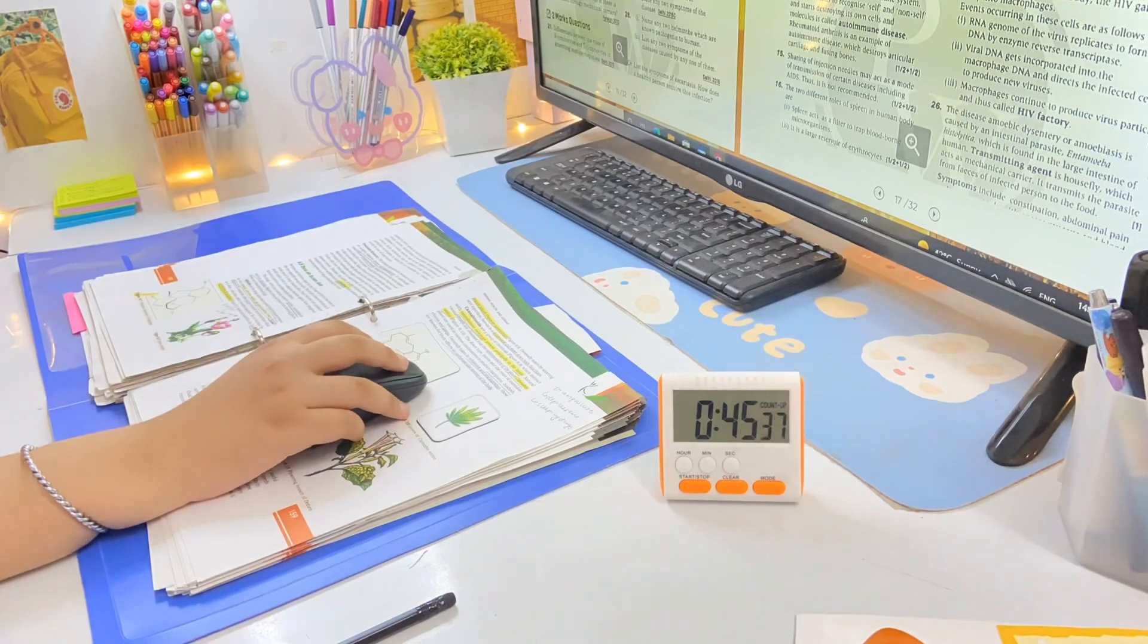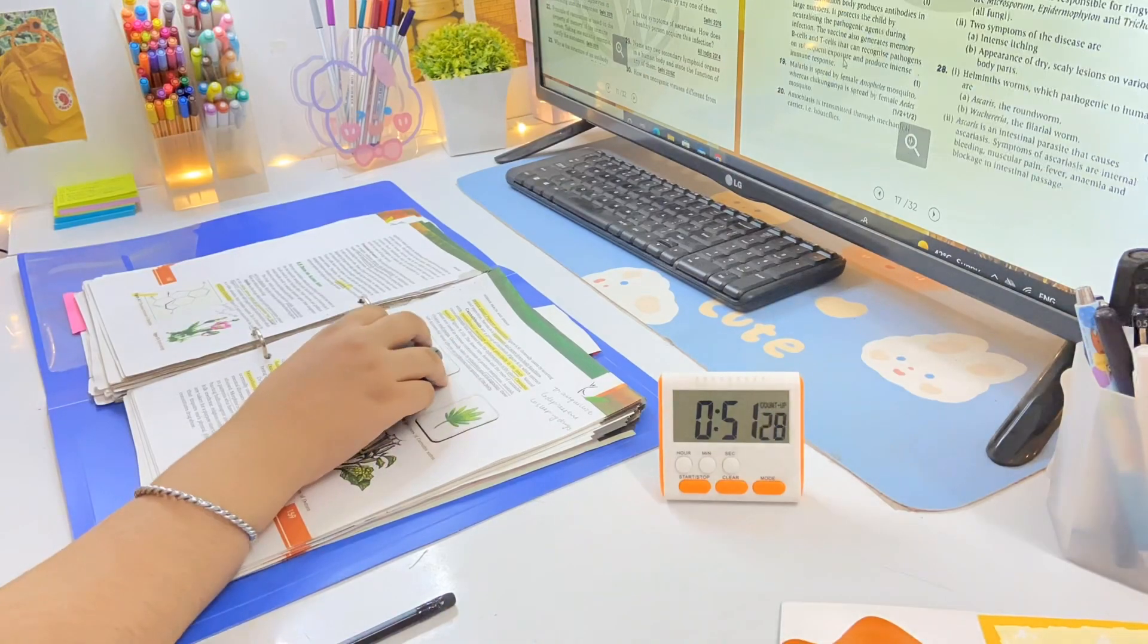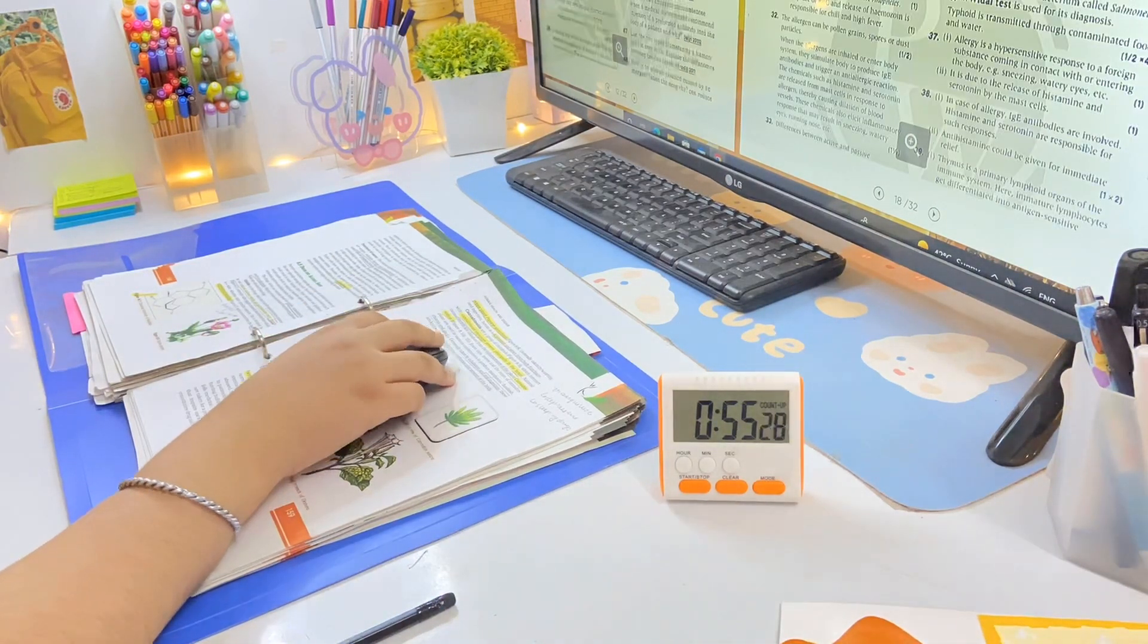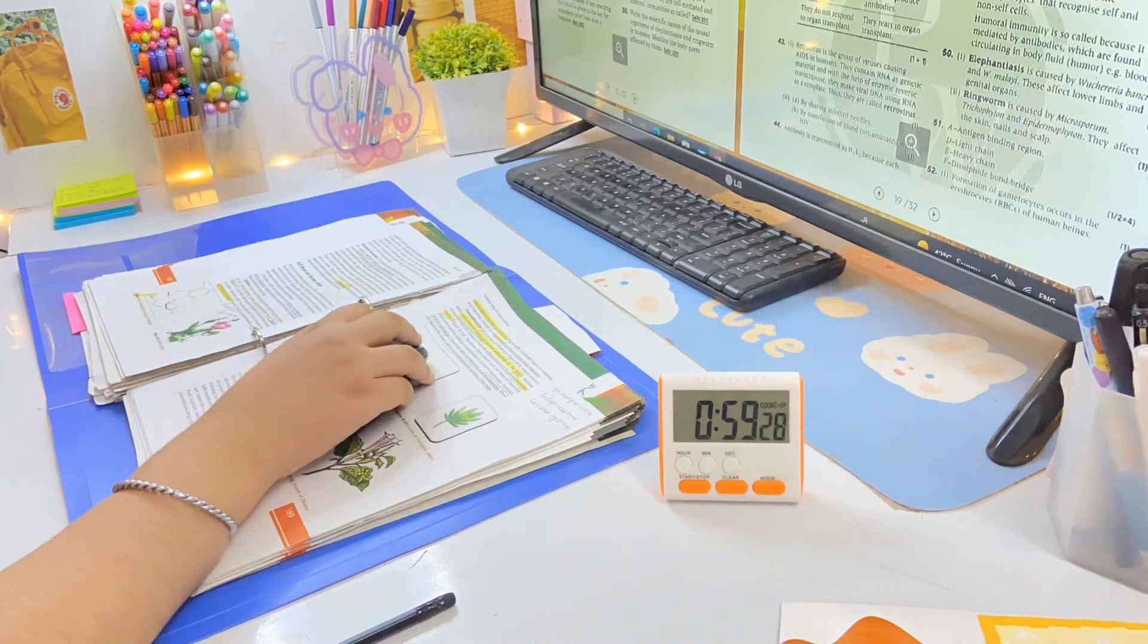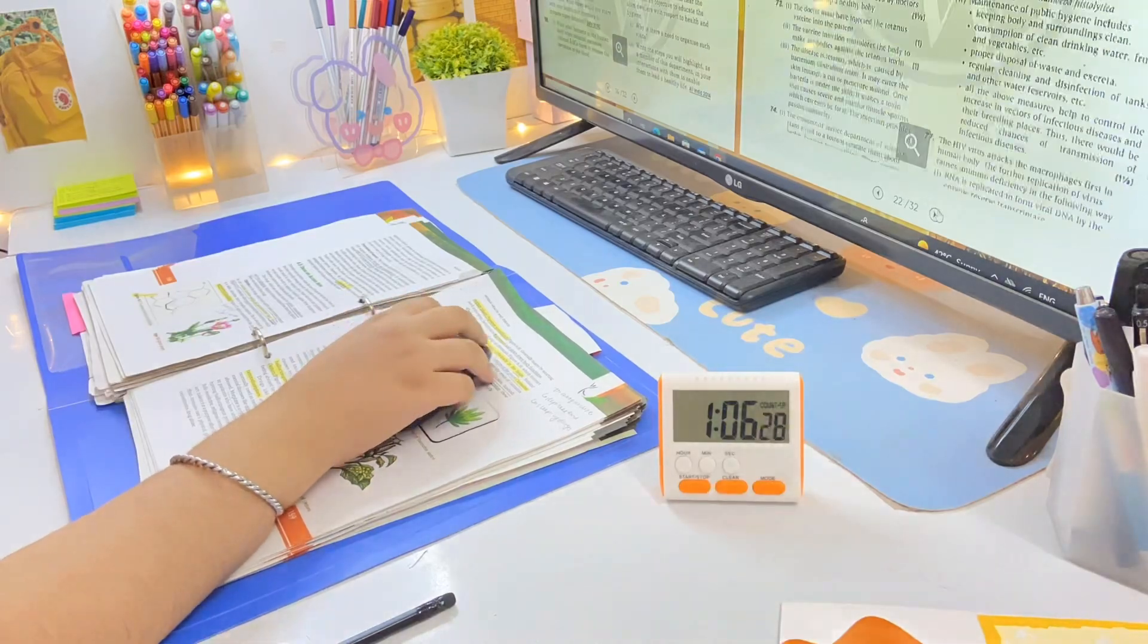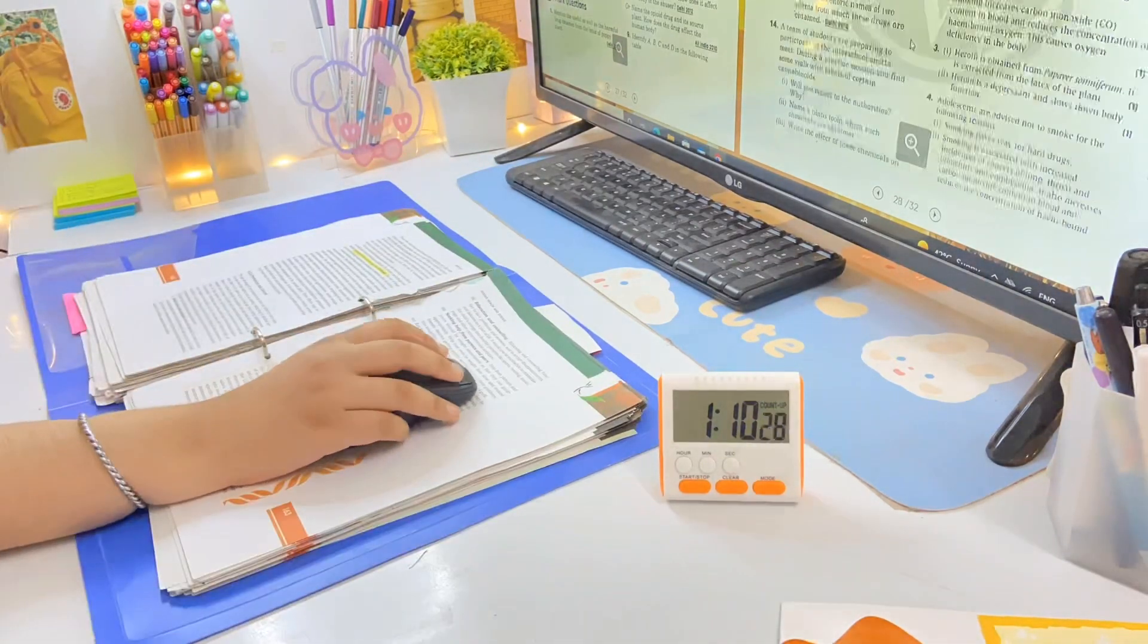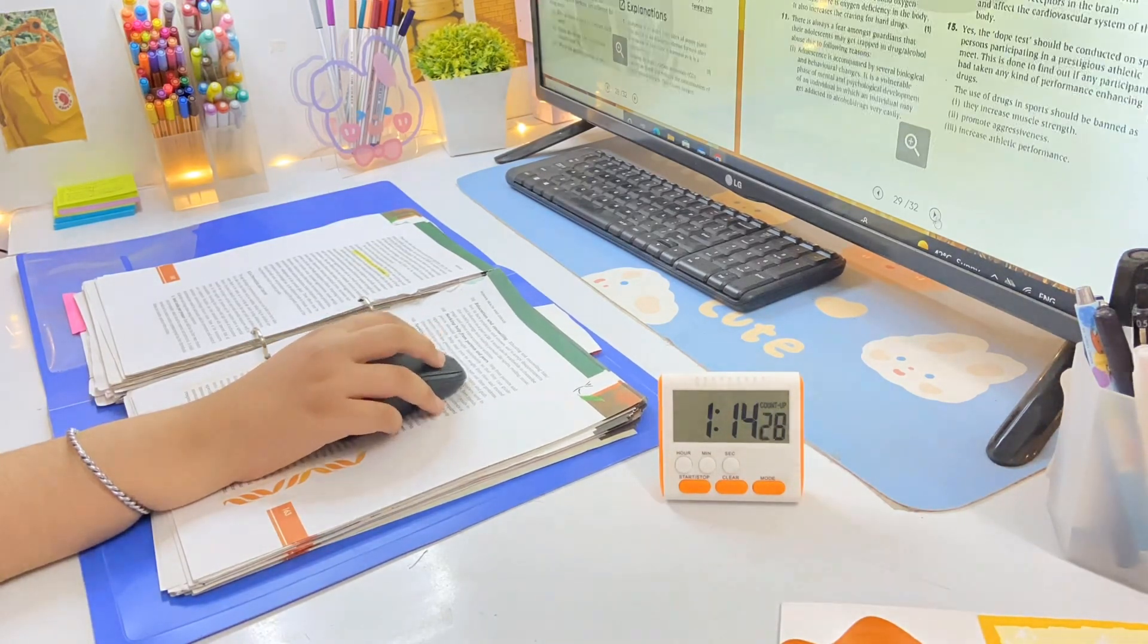So right here I'm revising the chapter called Human Health and Disease. Basically I'm reading this chapter from the biology book and side by side I am also reading its PYQs that have been asked in board examination. This helps me to know what type of questions have been asked previously in board exams and it also helps me to know how to actually write answers, because it has been two years since I have given proper theory exams and I almost forgot how to write proper answers.